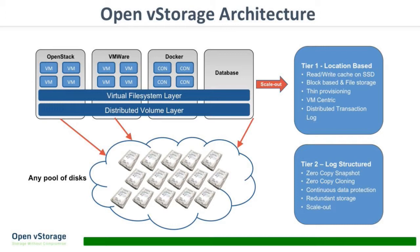We've actually created two storage solutions. The tier-one storage solution is location-based, speaks volumes, and has a read and write cache on SSDs or PCI flash for performance. It does thin provisioning, is VM-centric, and has a distributed transaction log. On the backend — on the disks or object storage — we use a log-structured approach. This is time-based: we aggregate every write of a volume into an object, then store it as a log onto our object store, S3, or a pool of disks. This enables zero-copy snapshots, thin cloning, continuous data protection so you don't need backups, and since it's objects, it's truly scale-out.